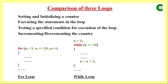When the program control arrives, the counter is initialized to 1, then it goes to the while statement and checks the condition. Since 1 is less than 10, it goes inside the loop, executes all the statements, and increments the counter. This repeats until n becomes 11. At that point when control returns to the while statement, it finds n is 11 which is greater than 10, so the loop is terminated and control moves to the next statement.